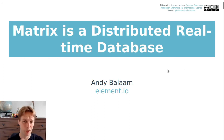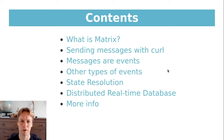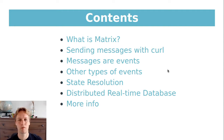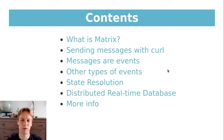Matrix is a real-time distributed database. First I'll talk about what Matrix is and why it's interesting — it's for sending messages and so much more. Then we'll look at the real details of what happens when you send a message: what JSON gets sent, what gets returned, and what it's like to implement a client. Then we'll talk about events, other event types, what it's like to implement a server, state resolution, and what other stuff you can do with Matrix as a distributed real-time database.